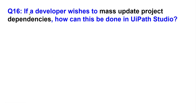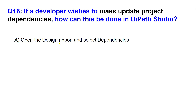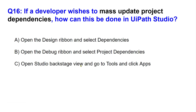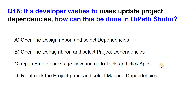Here is your first question: If a developer wishes to mass update project dependencies, how can this be done in UiPath Studio? Option A: Open the design ribbon and select dependencies. Option B: Open the debug ribbon and select project dependencies. Option C: Open Studio backstage view, go to tools, and click apps. Option D: Right-click the project panel and select manage dependencies. How would you go about mass updating project dependencies? This is a difficult question - take your time.